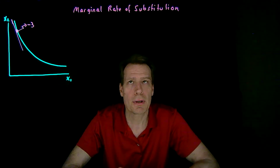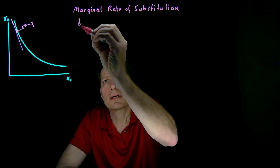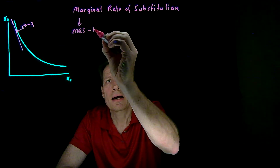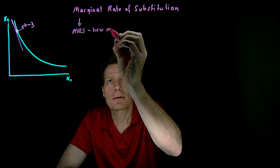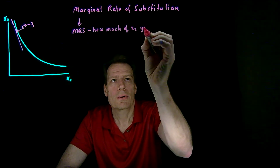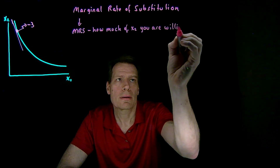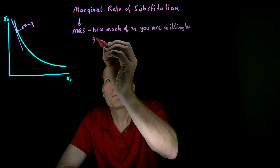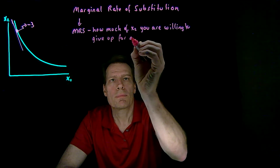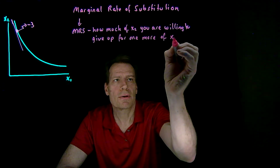And that's what's called the marginal rate of substitution. The marginal rate of substitution is often abbreviated as MRS, and it's how much of x2 you're willing to give up for 1 more of x1.